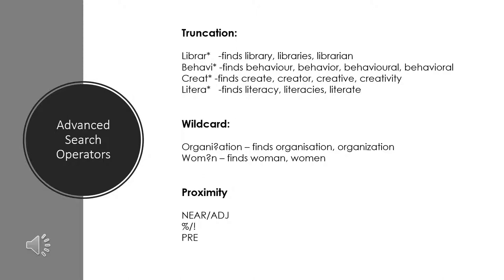Now let's look at some advanced search operators that can be used across databases, Google, and Google Scholar searches. The first is truncation. Truncation means to truncate, or finish early, or abbreviate a word and replace the end part with an asterisk — a symbol meaning 'and other letters'. Truncation is also sometimes known as stemming, because we're using the stem of the word and allowing the ending to be interpreted in many ways. For example, we can use an asterisk to truncate 'librar*', which allows the database to search for library, libraries, or librarian.